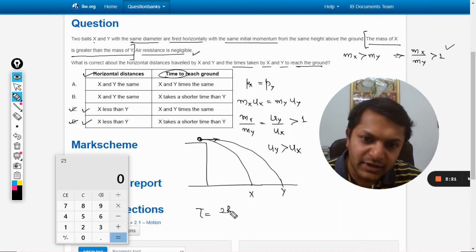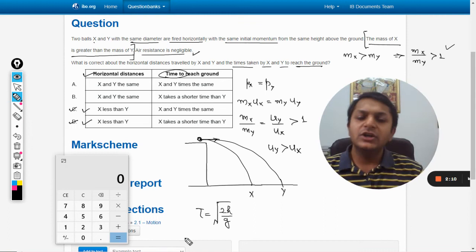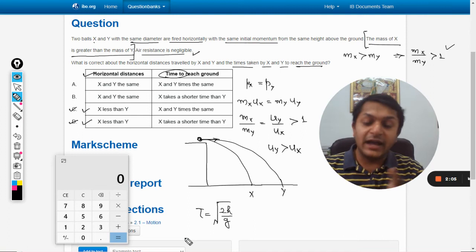Now what is time to reach the ground T? We know the formula for this time is root of 2h by g. This is the time taken by the body when it falls on the ground when it is dropped.